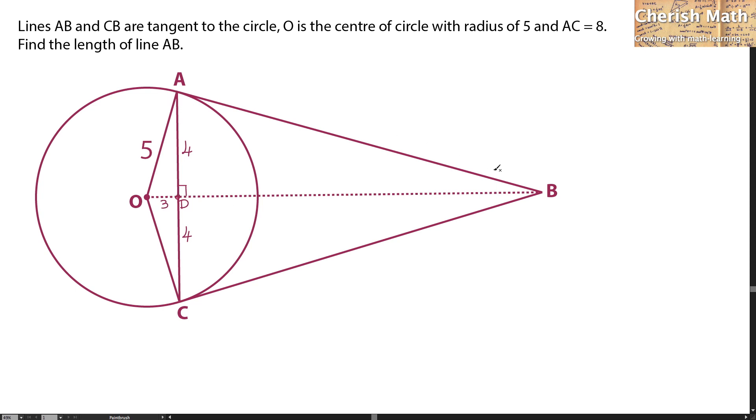Line AB is tangent to the circle, so this part forms a right angle with the radius.